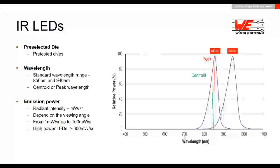The peak wavelength is the point of maximum emission — where the emitted power is at its highest. The centroid wavelength is a quality parameter of the infrared LED that describes how a detector perceives the infrared light. It gives the middle point of the emission spectrum, where the energy on the left and right sides of the peak are equal — in other words, the centroid wavelength divides the spectrum into two energetically equal parts.